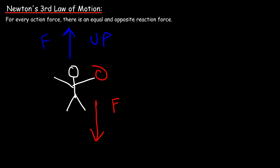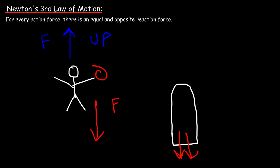This example can also be applied to a rocket. When a rocket launches into space, it expels gas downward, and based on Newton's third law an upward force is created. That upward force causes the rocket to accelerate upward — and so now you know how rockets work.